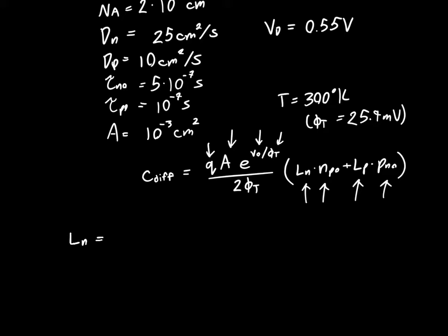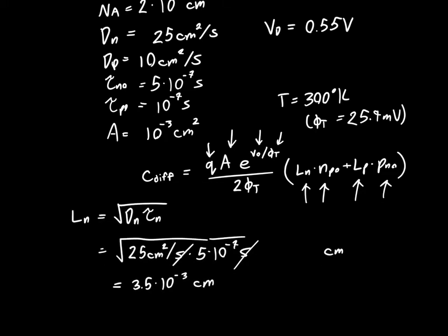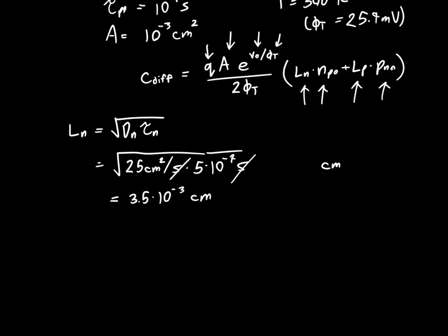So we know that LN or LP, if you just switch around the subscripts, is just equal to the square root of DN times tau N. And so if we plug in DN times tau N, that's 25 centimeters squared per second times 5 times 10 to the minus 7 seconds. And so seconds cancel as we expect. Centimeters comes out front after getting square rooted, centimeters squared getting square rooted. And we'll get a value of 3.5 times 10 to the minus 3 centimeters. And so this makes sense. It's not 10 kilometers. It's not a million miles. The units and the quantity seems reasonable.